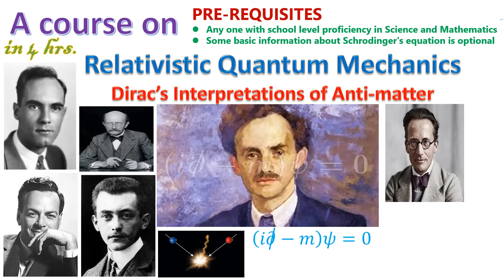In particle physics, the Dirac's equation is the relativistic wave equation derived by the British physicist Paul Dirac in 1928. It was the first theory to fully integrate special relativity within the framework of quantum mechanics. Dirac's equation was validated by accurately explaining the fine structure of the hydrogen atom, which we are going to discuss in this course.